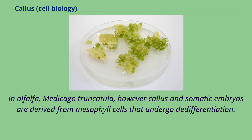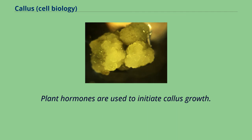In alfalfa, Medicago truncatula, however, callus and somatic embryos are derived from mesophyll cells that undergo de-differentiation. Plant hormones are used to initiate callus growth.